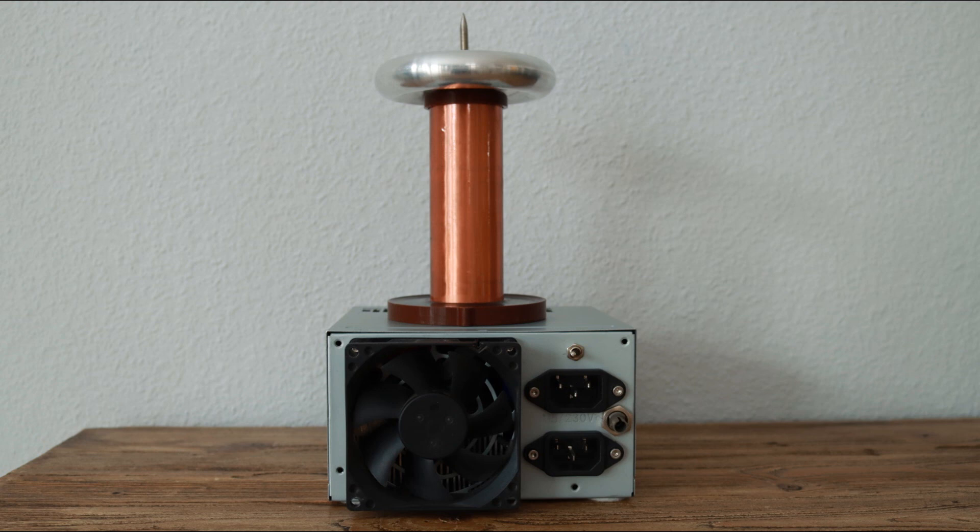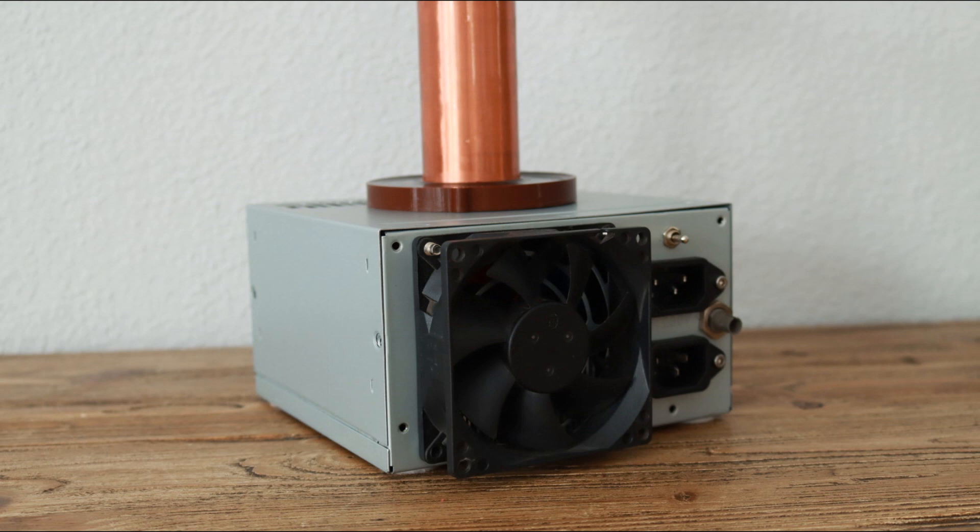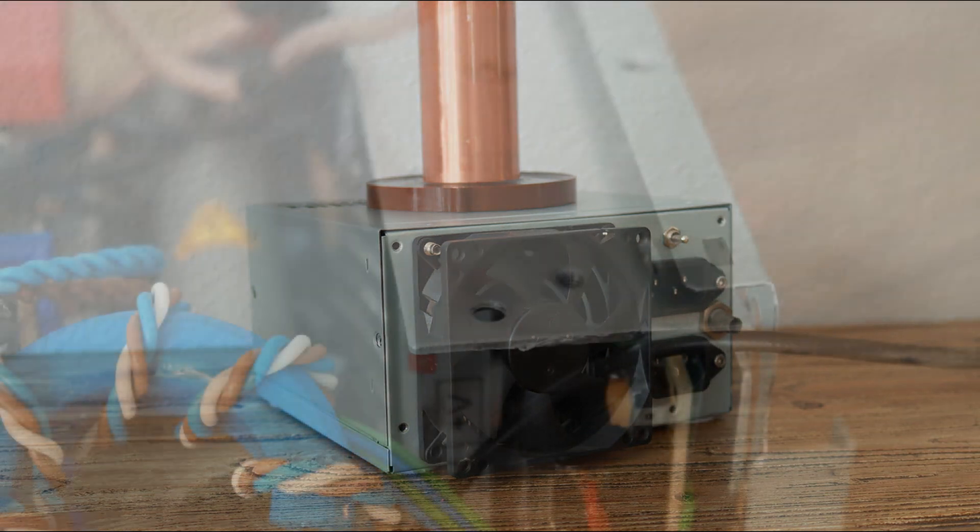I built a complete circuit for the Tani Tesla Coil in an old computer power supply case. This has the advantage that the complete circuit is well shielded. Furthermore it looks very compact.